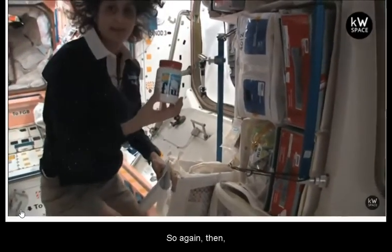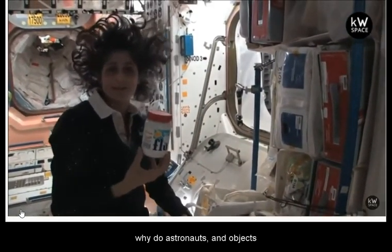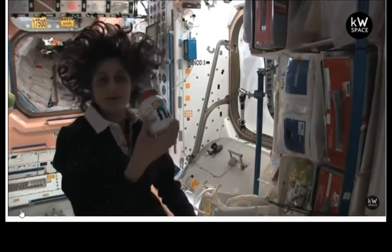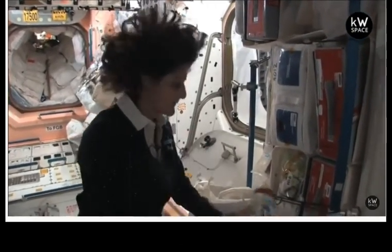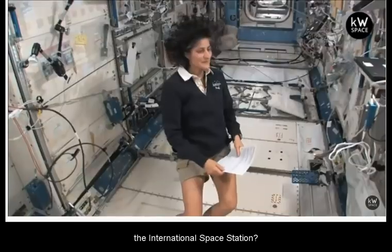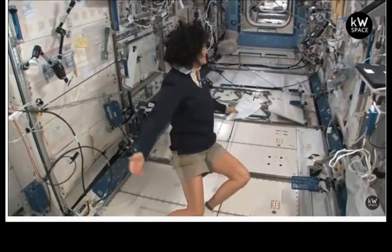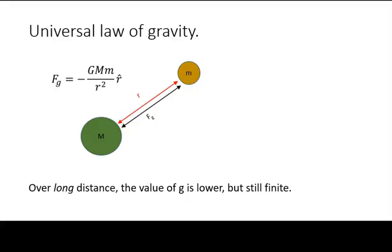So, again then, why do astronauts and objects seem to float inside the International Space Station? The space station is only a few hundred kilometers above the surface of the Earth. Hence, the gravitational pull on it must still be quite high according to the universal law of gravity.